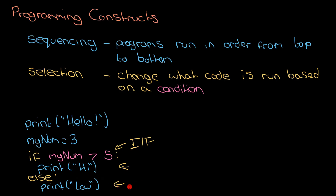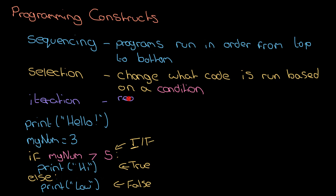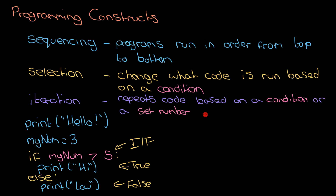Because the condition is false, the else part of the if statement runs, so I get the word 'low' printed. It's simply the idea that we have a condition: if it's true, one part of the code runs; if it's false, another part runs. Now we move on to iteration, which can seem mind-blowing, but it's just the idea that we repeat code — either based on a condition or a set number of times, called condition-controlled or count-controlled.